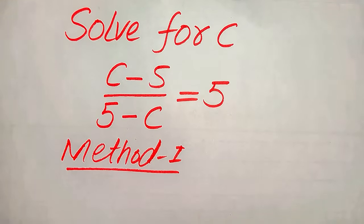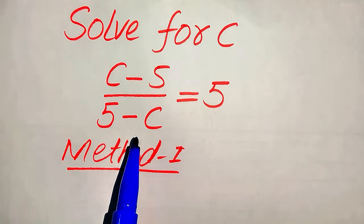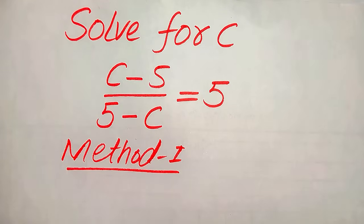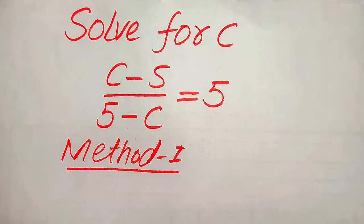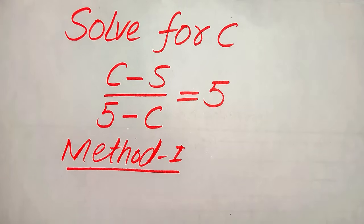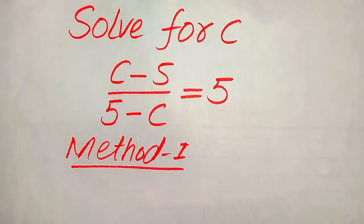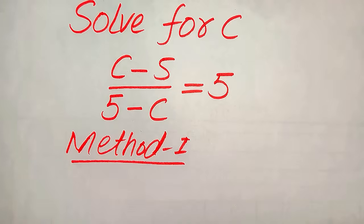Hello everyone. How to solve this problem for the values of c if we have c minus 5 divided by 5 minus c is equals to 5. We solve this problem for all the values of c. Here we first find all the roots of this equation, then check which roots satisfy the question statement, and finally check whether a solution exists or not. We solve this problem using two methods — please share any other method in the comments.